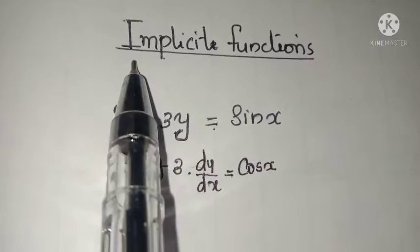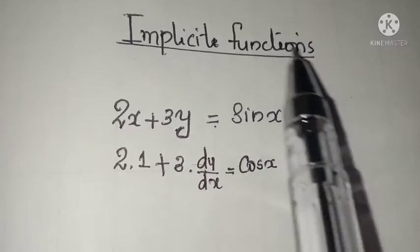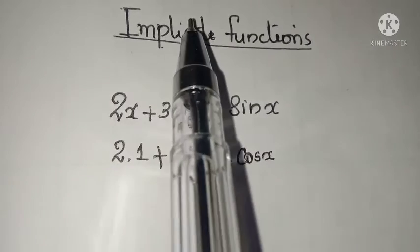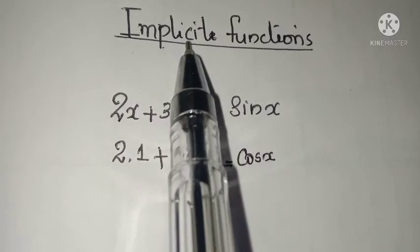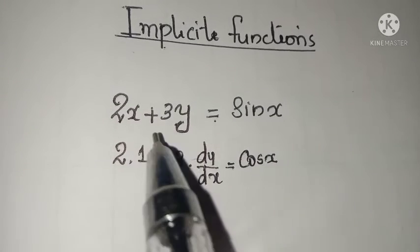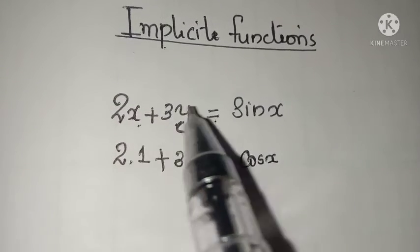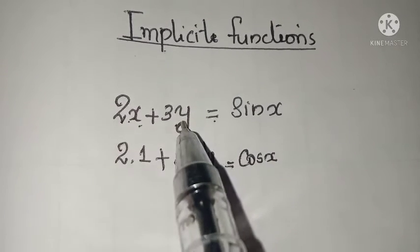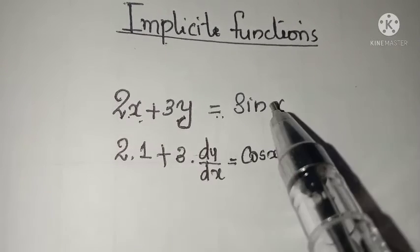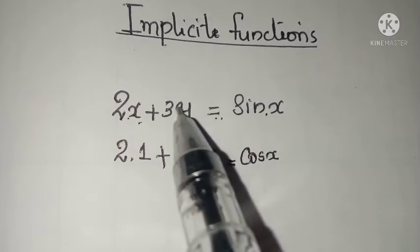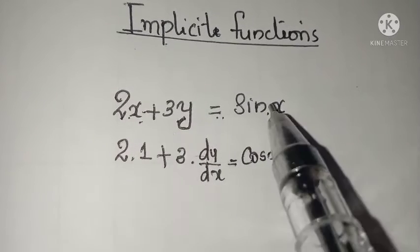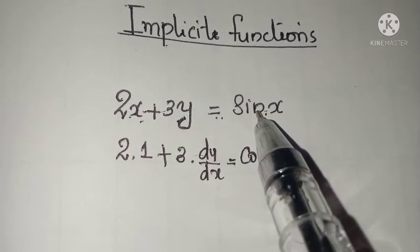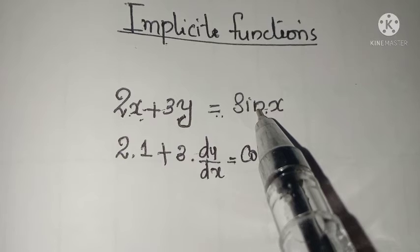Listen children, first we have to discuss how to find derivatives of implicit functions. Let's see the example: 2x plus 3y is equal to sin x. We are going to differentiate the given expression with respect to x.